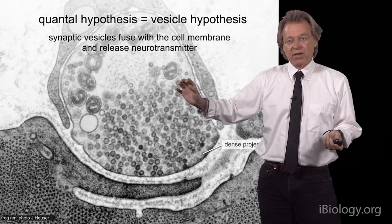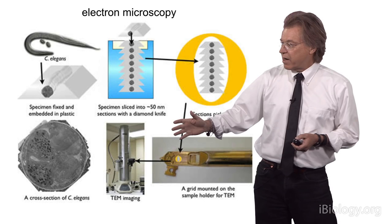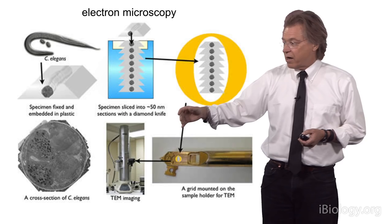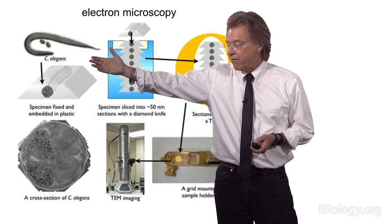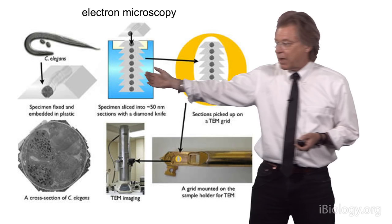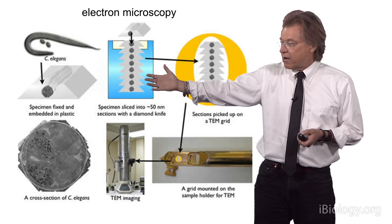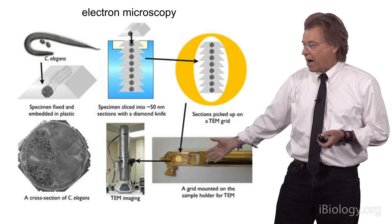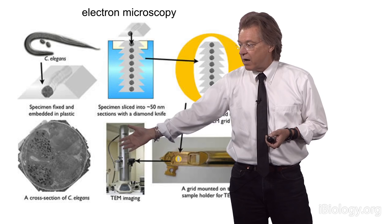I want to step back and tell you a little bit about how these images were created. They're created by an electron microscope. First, you embed your sample in plastic — in this case I have a worm, a nematode, C. elegans. It's fixed and then embedded in plastic. The plastic block is cut into sections, those sections are picked up onto a grid, which is mounted and goes into the electron microscope, and you get an image of the cross-section as shown here.